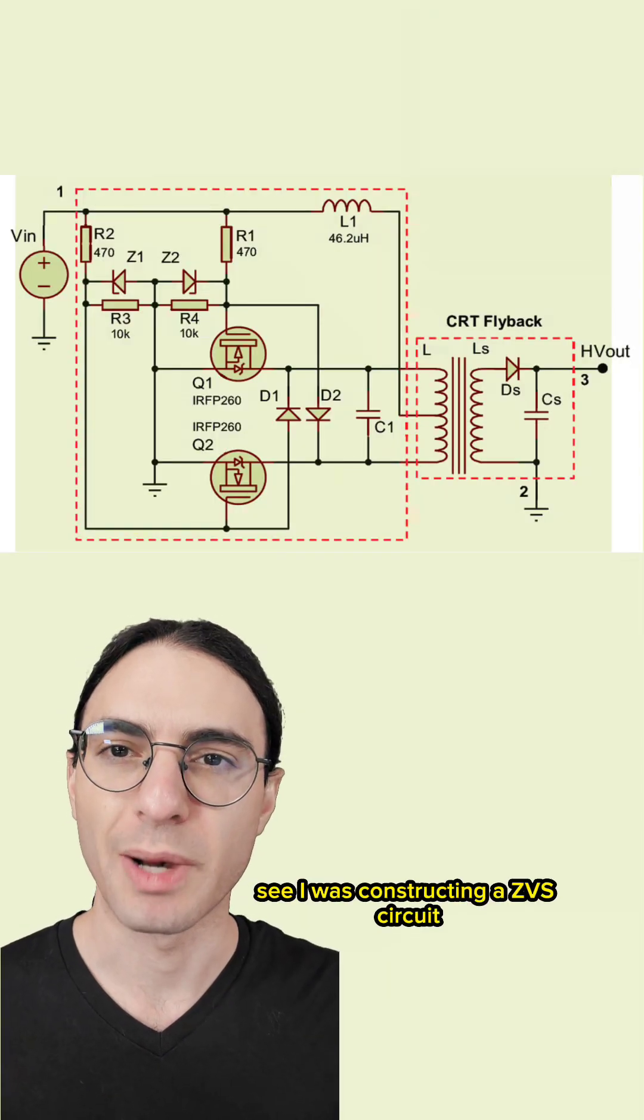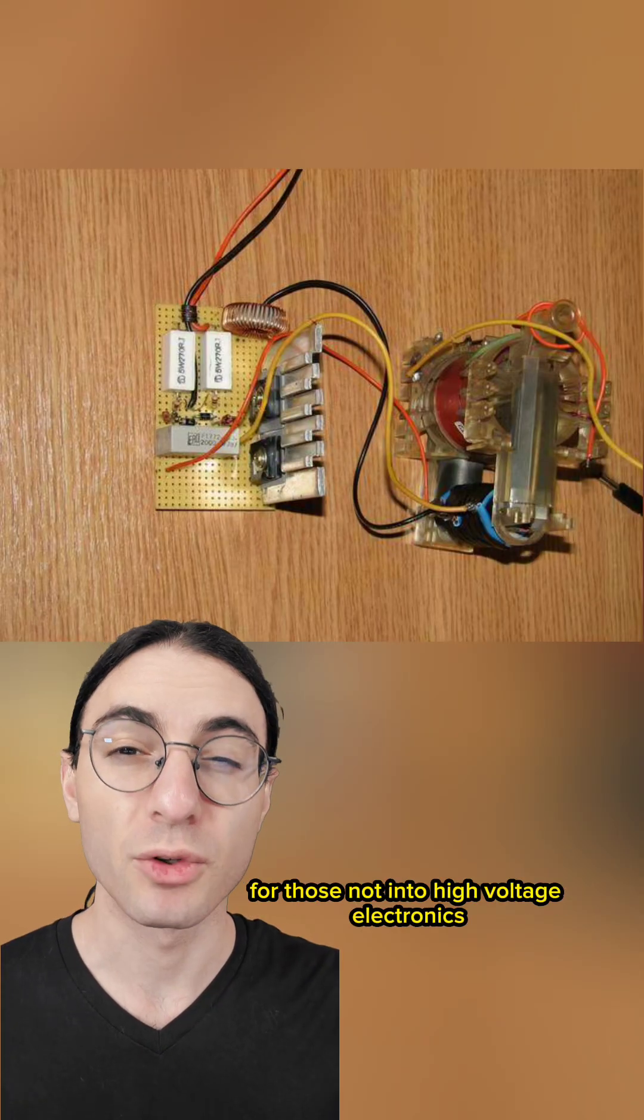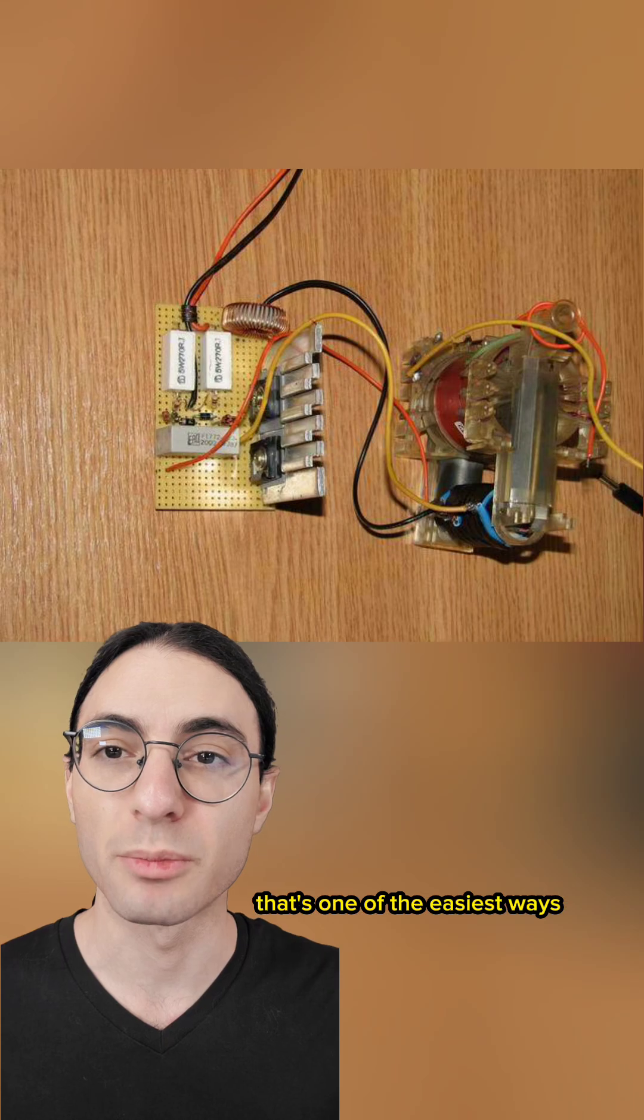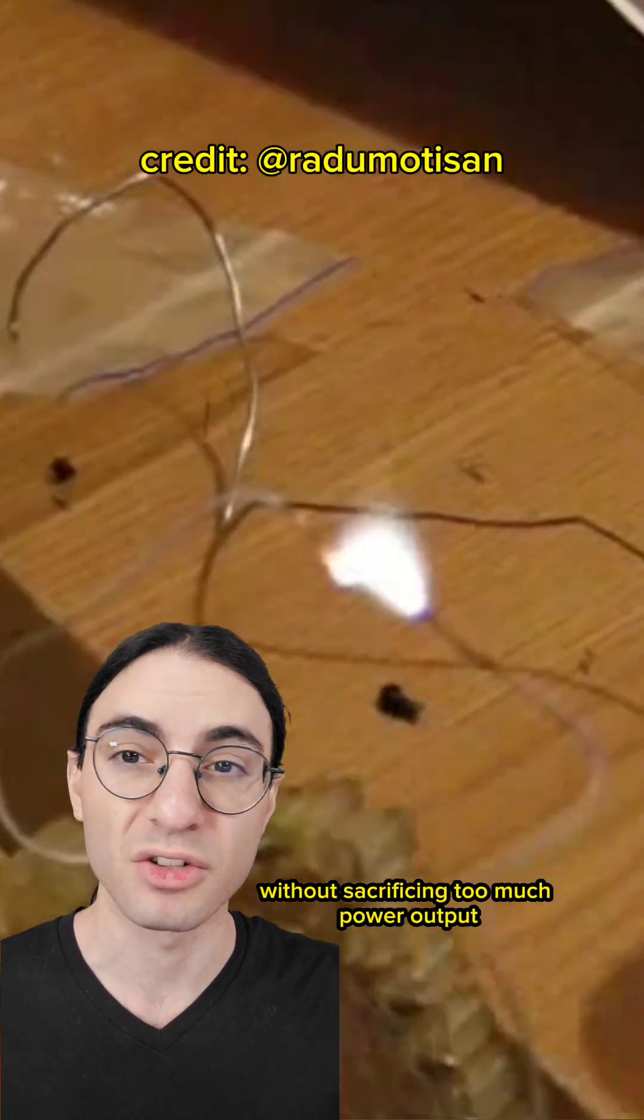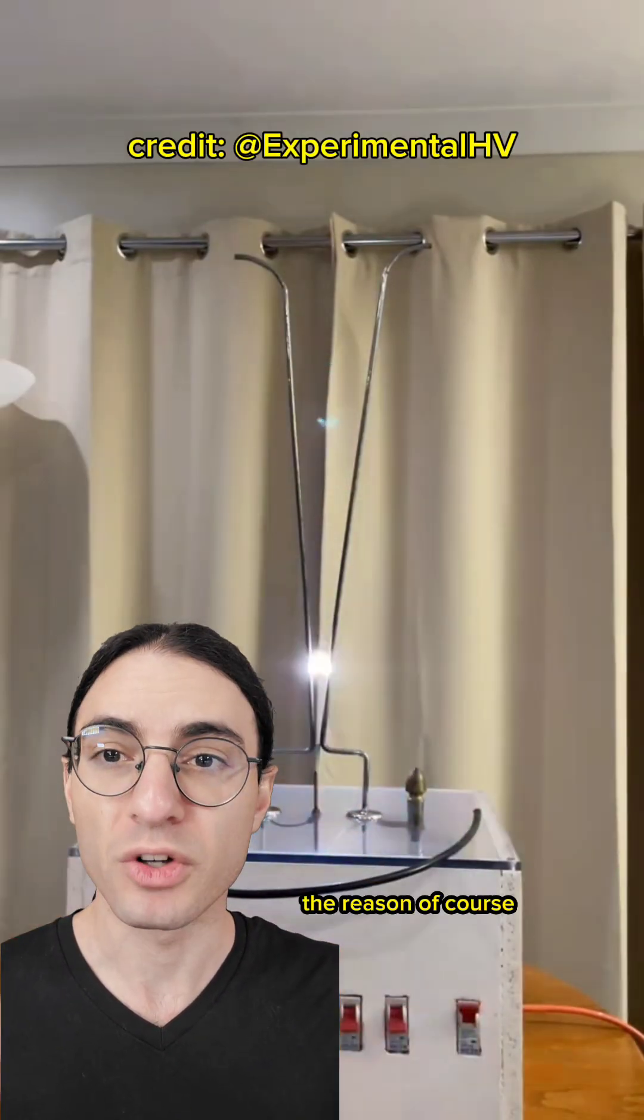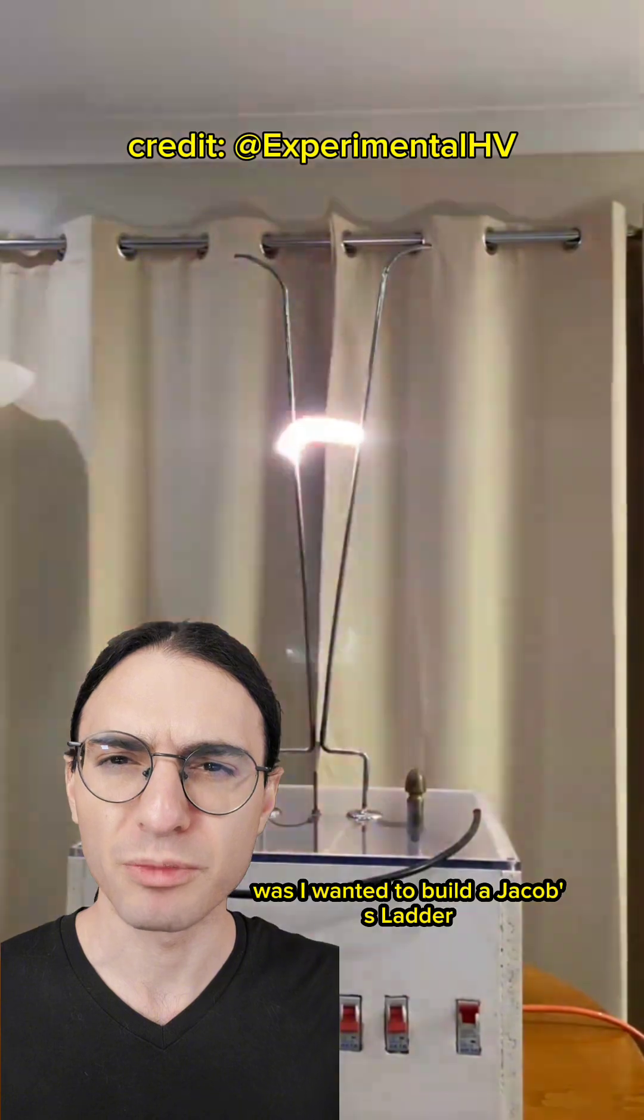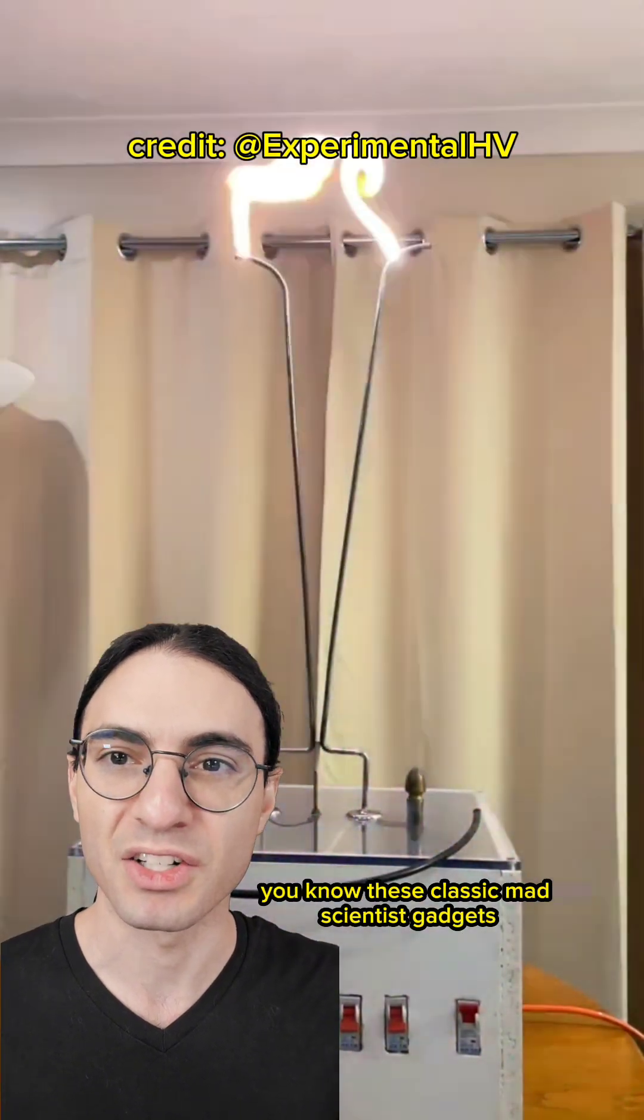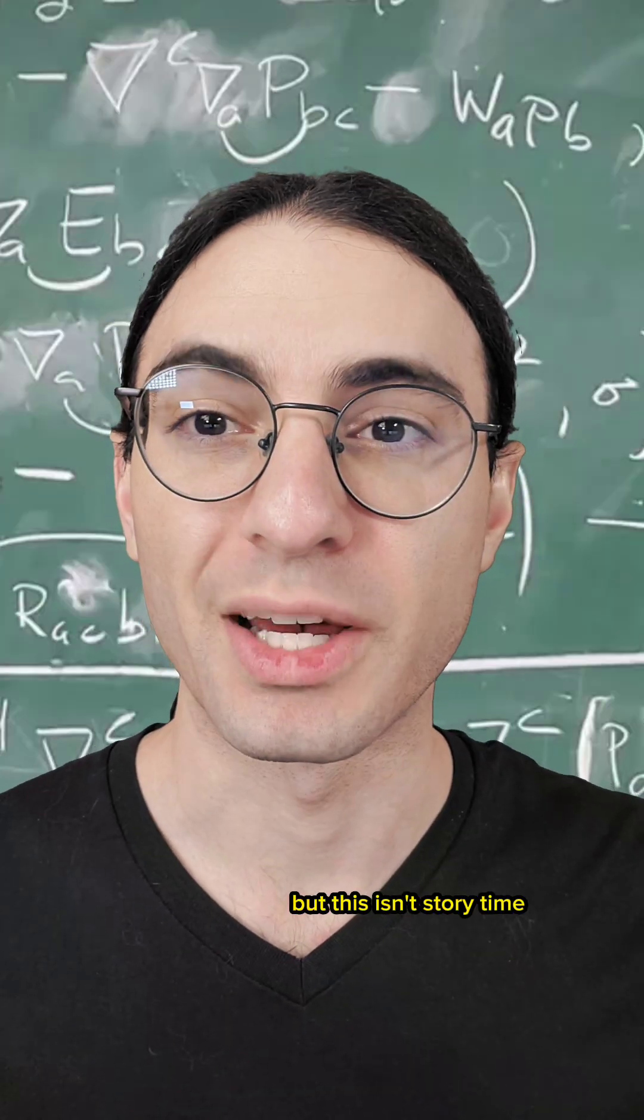I was constructing a ZVS circuit to power a flyback transformer. For those not into high-voltage electronics, that's one of the easiest ways to build a high-voltage source without sacrificing too much power output. The reason was I wanted to build a Jacob's Ladder. These classic mad scientist gadgets that don't really do anything. But this isn't storytime,